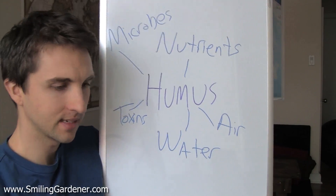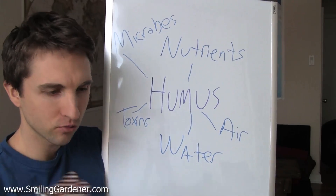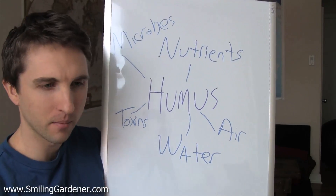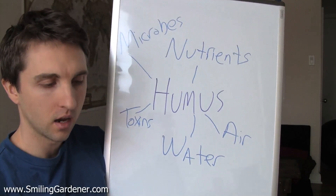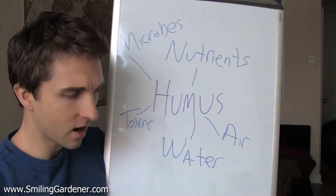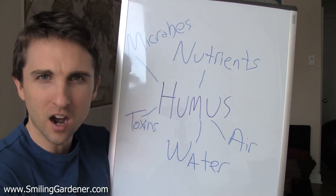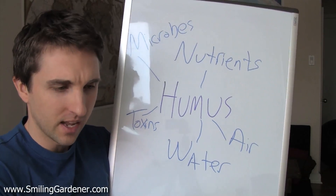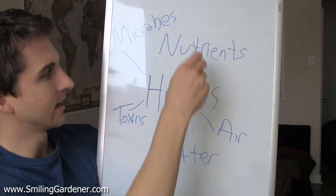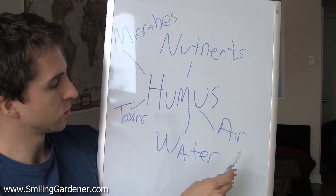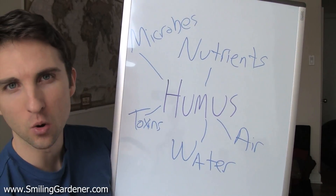So that's what humus is. It's organic matter — whether it be compost or mulch or any kind of organic matter — that's been shredded by insects and broken down by microbes and bacteria until it's this very complex carbon chain. It's so broken down you can't tell what it was initially. And then it does these things: it holds nutrients, holds water, creates air spaces, buffers toxins, and makes a home for microbes.